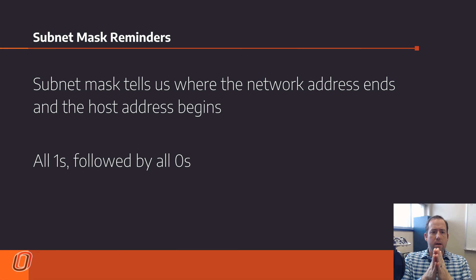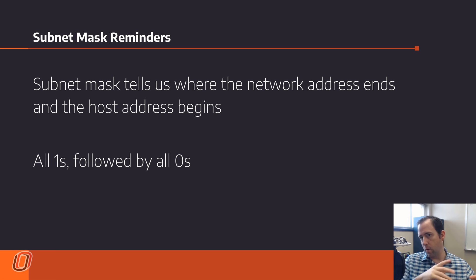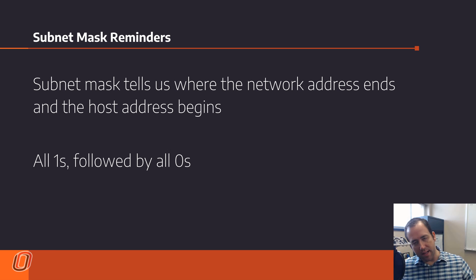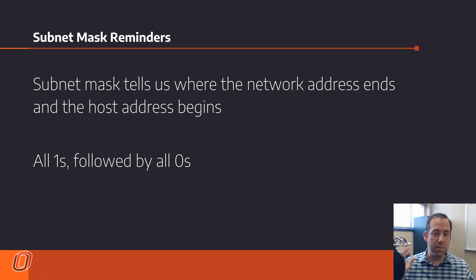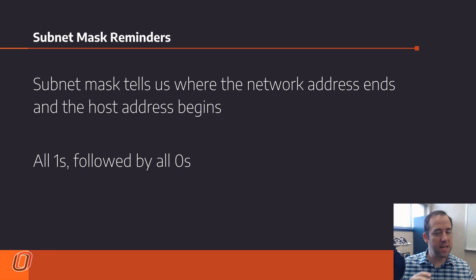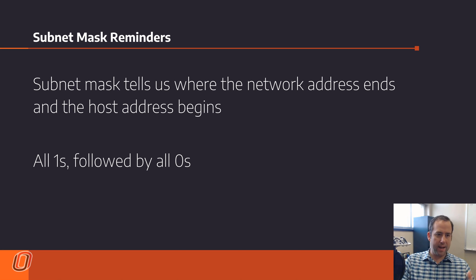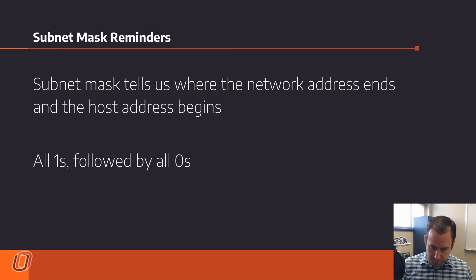The subnet mask tells us where the network address ends and the host address begins. You've got classful subnet masks — class A, class B, class C — and then you've got classless subnet masks that can be any length that you want. That's the slash notation: slash 15, slash 20, slash 22, etc. The subnet mask is always a bunch of ones followed by some zeros.